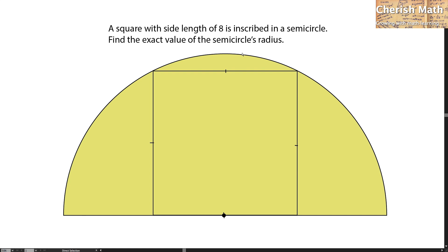I begin with drawing a line from the center of the semicircle to the corner that I'm pointing here. And this red dotted line is going to be the radius that I denote with r of the semicircle. The height of the square is 8 units.